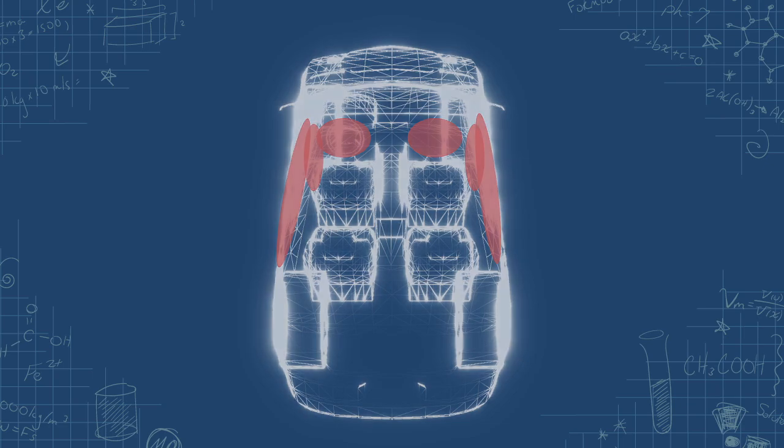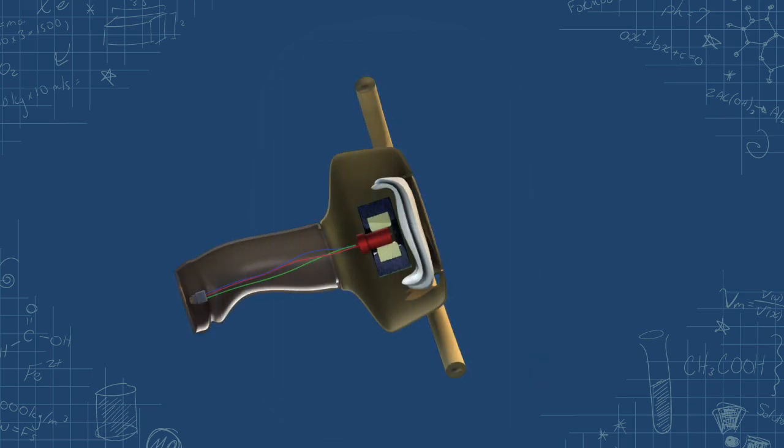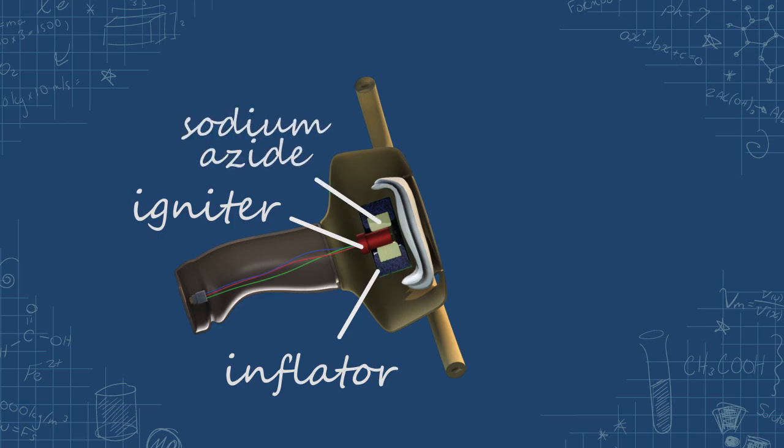The airbag unit is made up of two main components. There's an inflator that contains an igniter and chemicals, including sodium azide. Nestled on top of the inflator is the folded airbag.